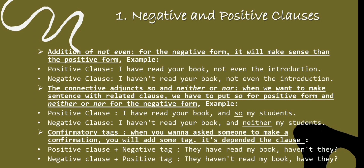The second point is about the connective adjunct: 'so' and 'neither/nor'. When we want to make a sentence with a relative clause, we use 'so' for the positive form and 'neither' or 'nor' for the negative form. Example in positive: 'I've read your book, and so has my student.' In negative: 'I haven't read your book, and neither has my student.' The positive means both teacher and student have read the book; the negative means neither of them has. 'Neither' follows the polarity of the previous clause.